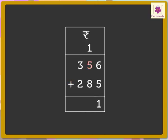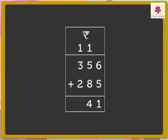Now, 1 plus 5 plus 8 is equal to 14. Carry 1 above the number 3. Write 4 in the answer, that is, in the tens place. Lastly, 1 plus 3 plus 2 is equal to 6. So, the total is 641 rupees.